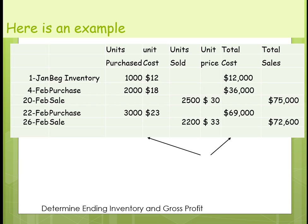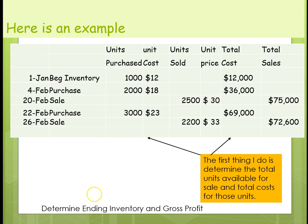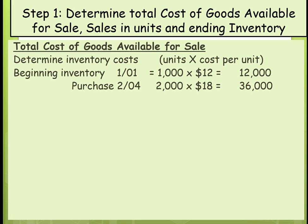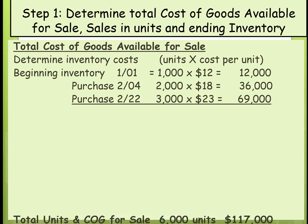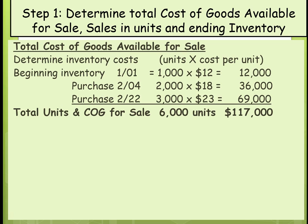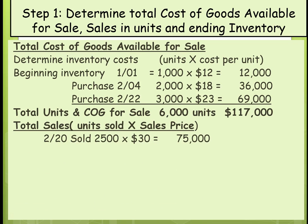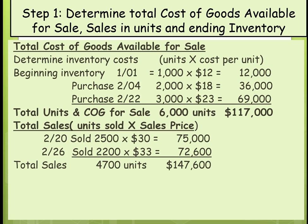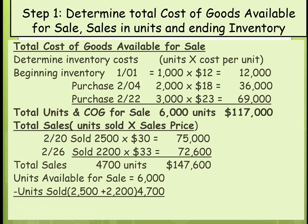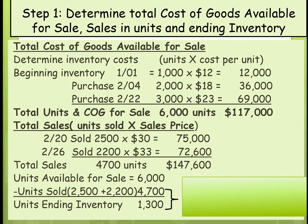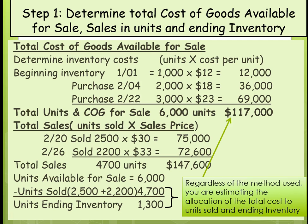We're going to do exactly the same problem. The first thing we're going to do is determine the total units available for sale and the total cost for those units. Our total cost is beginning inventory plus purchases. We know that we had a total of 6,000 units available for sale with a cost of $117,000. Total units sold: we sold 2,500 at $30,000 and 2,200 at $33,000, so total sales is $147,600. We had 6,000 units available for sale and sold 4,700, which means ending inventory is made up of 1,300 units. We're trying to allocate that $117,000 between units sold and ending inventory.